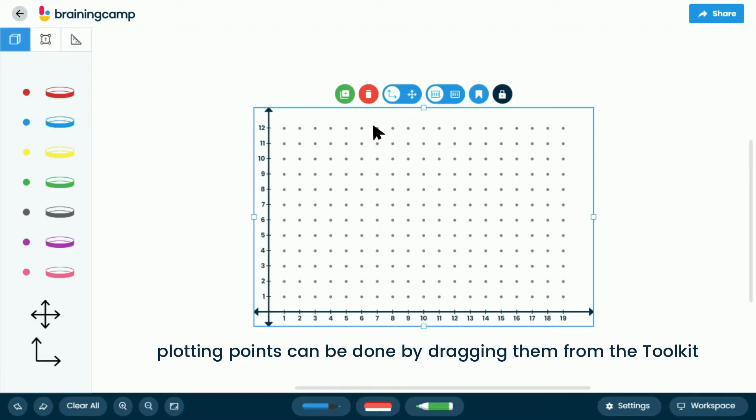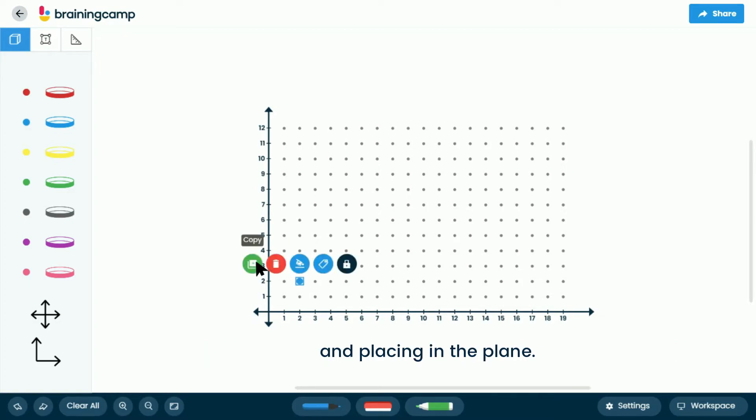While in the basic workspace, plotting points can be done by dragging them from the toolkit and placing in the plane.